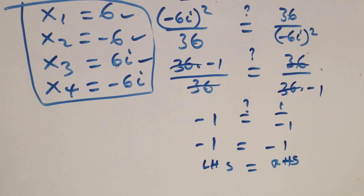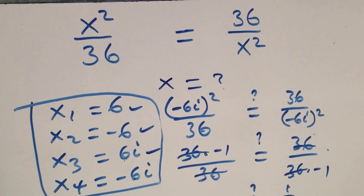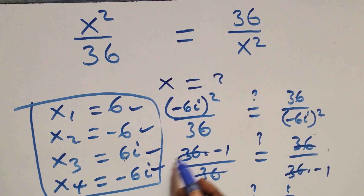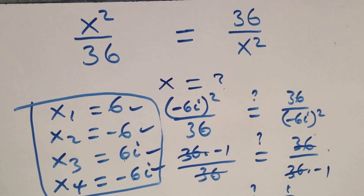Therefore we conclude that x = −6i also satisfies this given problem. Thank you for watching — don't forget to subscribe for more videos, turn on the notification bell, share this video, give it a thumbs up, and leave your comments. See you next time, bye for now.